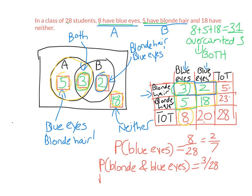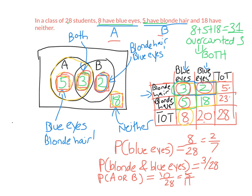What's the probability a student has blonde hair OR blue eyes? I can write this as P(A or B) since A is blue eyes and B is blonde hair. Remember, A or B means all those in A, all those in B, and all those in both. In the Venn diagram, we're talking about the three numbers inside the circles. In the two-way table, we're looking at those same three numbers — people with blue eyes, blonde hair, or both. Adding those up gives 10 out of 28, which simplifies to 5 over 14.